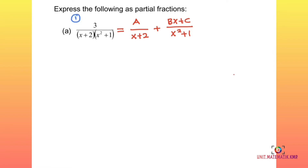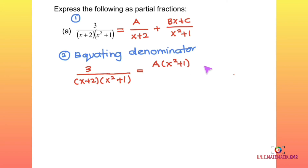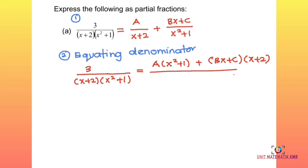Step 2: equate the denominators. The left-hand side is 3 over (x + 2)(x² + 1). On the right-hand side, A already has (x + 2) in its denominator, so multiply A by (x² + 1). For Bx + C, which already has (x² + 1), multiply by (x + 2). This ensures the denominators on both sides are equal.